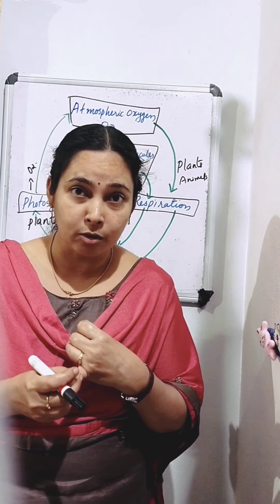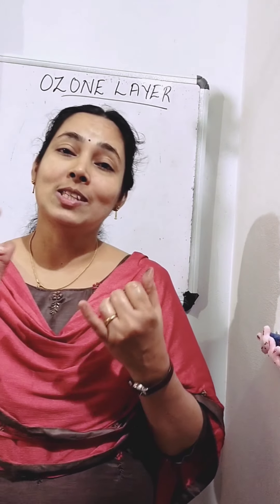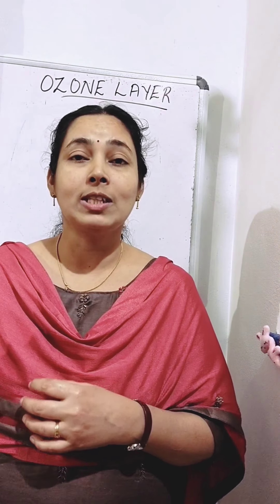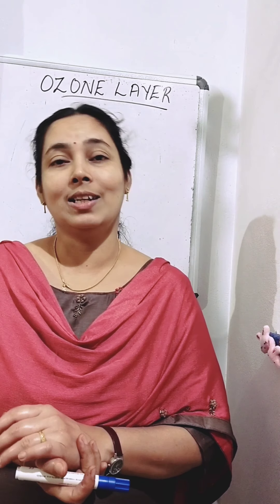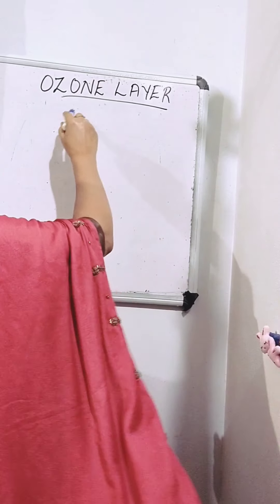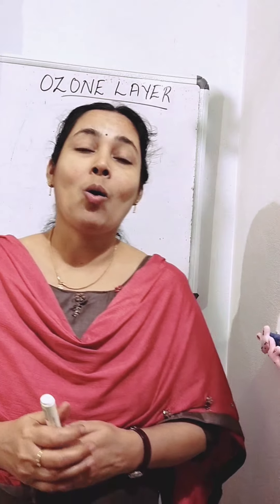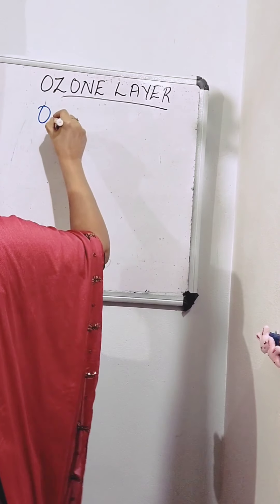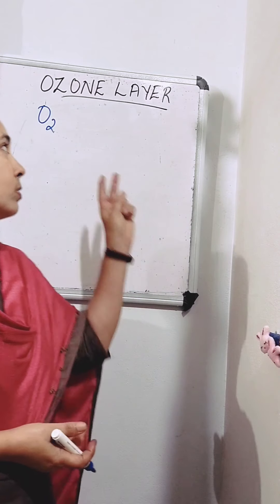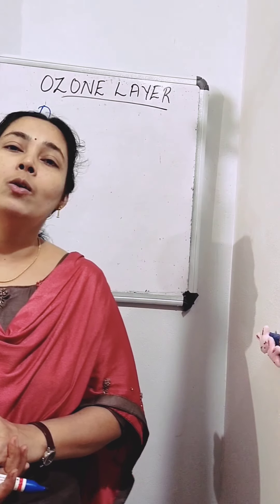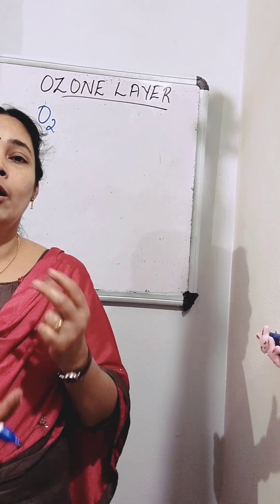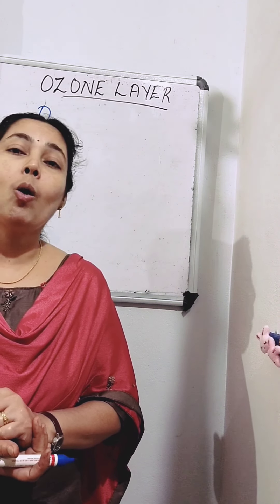Oxygen is returned back into the atmosphere through the process of photosynthesis, and it is taken in for the process of respiration, combustion and formation of oxides. So the amount of oxygen in the atmosphere is always kept constant. Now we can discuss our next topic — the ozone layer. We know that oxygen is O₂, meaning an oxygen molecule is made up of two atoms of oxygen combined together. Oxygen gas is essential for life because it is needed for living things in the process of respiration.